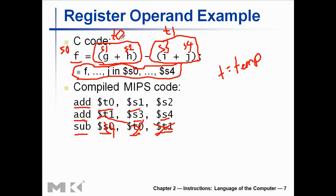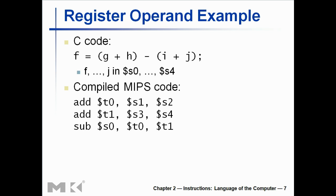Somewhere in my code I declared int g, int h, int i, int j — those are already saved in s registers. I need the result of f, but I don't need the intermediate results of g plus h and i plus j. So I keep those in temporary values because all they need to do is give me the final summation. When I get that, I store it in an s value which is f, s0, as given in the question. That's how you do it.